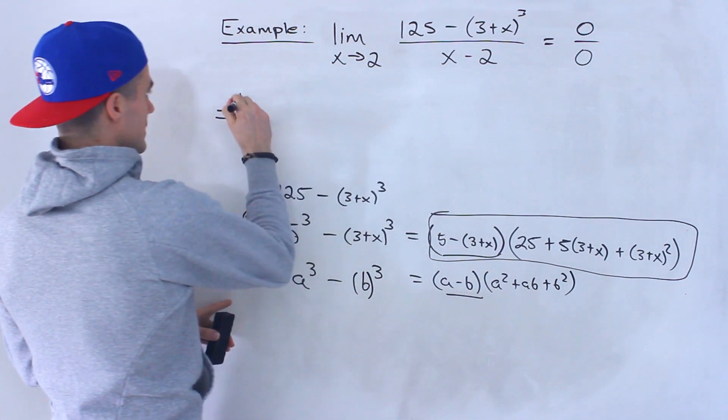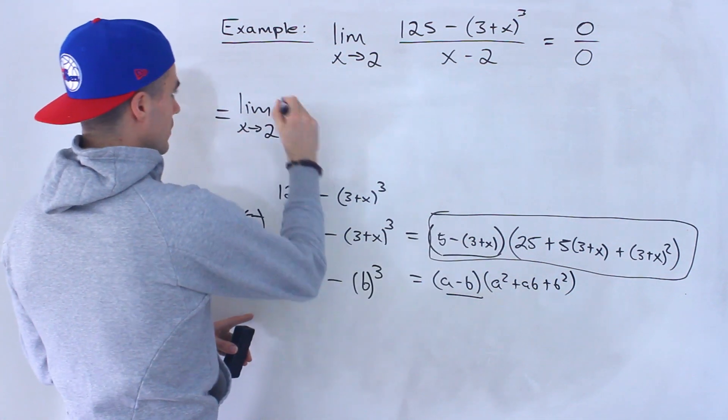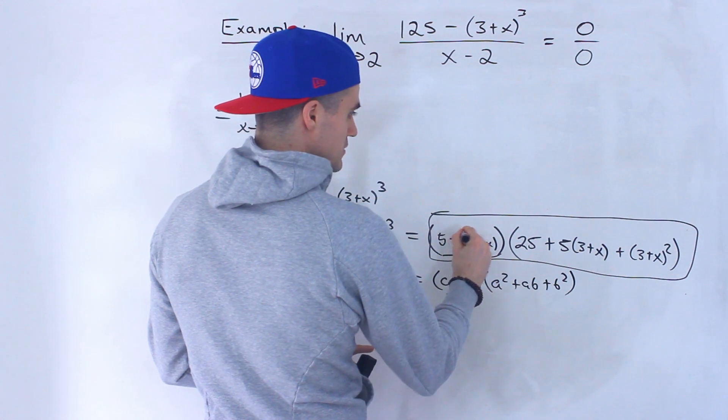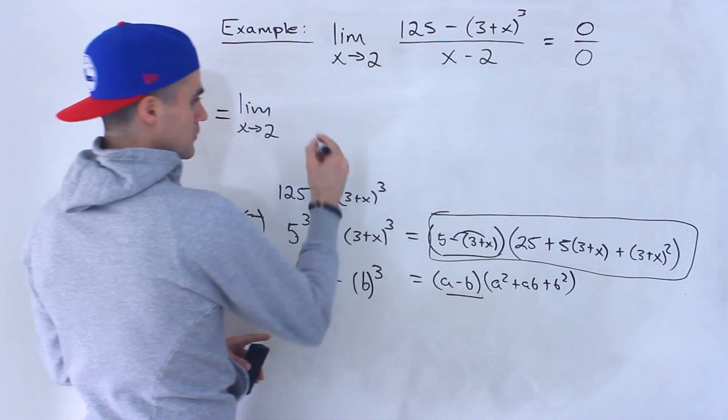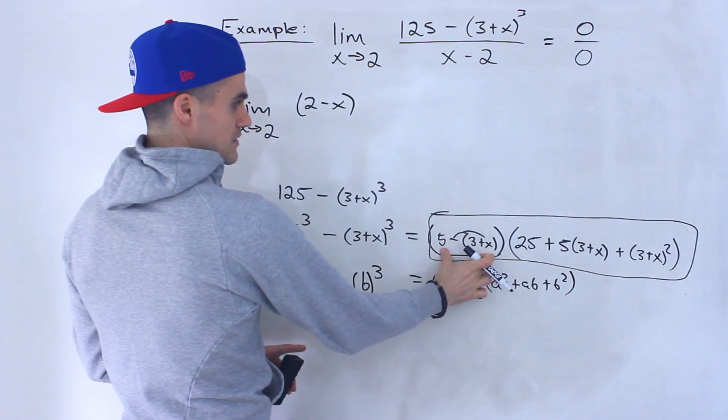And then notice that over here, 5 minus 3 and then minus x. So 5 minus 3 would be 2, so we'd have 2 minus x, this bracket here.